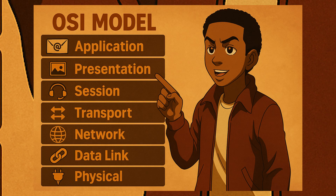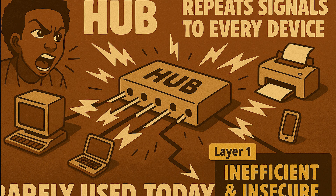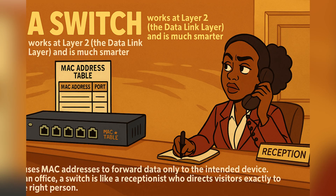Next up, let's talk about network devices — the building blocks of every network. Understanding what each device does and which OSI layer it operates on is key for the exam and your real-life IT career. A hub is the simplest device; it operates at Layer 1, the Physical Layer, and just repeats signals out to every connected device — like shouting in a crowded room. That's inefficient and insecure, which is why hubs are rarely used today. A switch works at Layer 2, the Data Link Layer, and is much smarter — it uses MAC addresses to forward data only to the intended device.